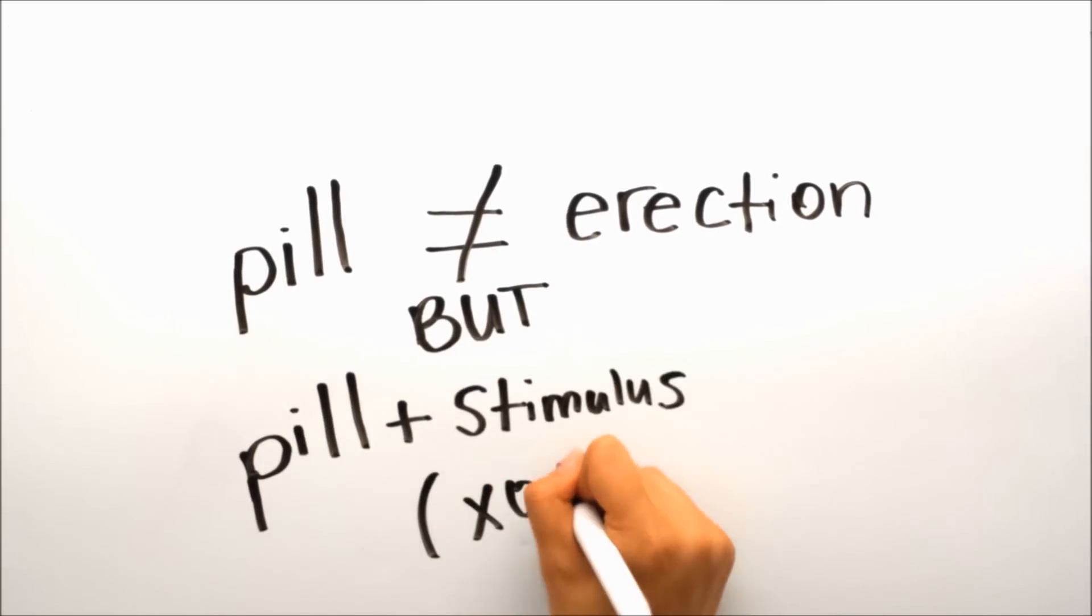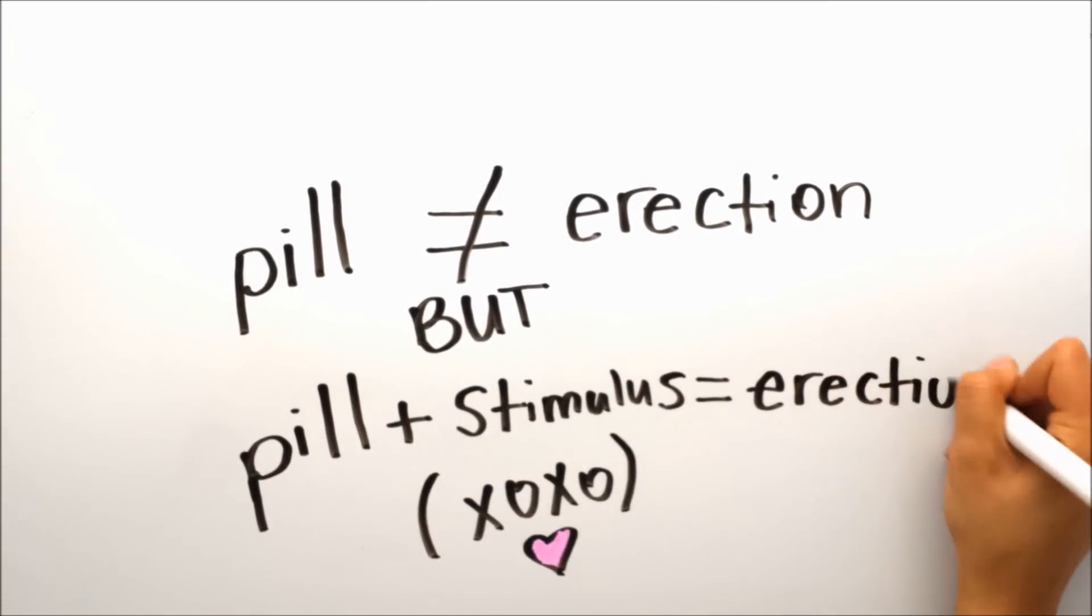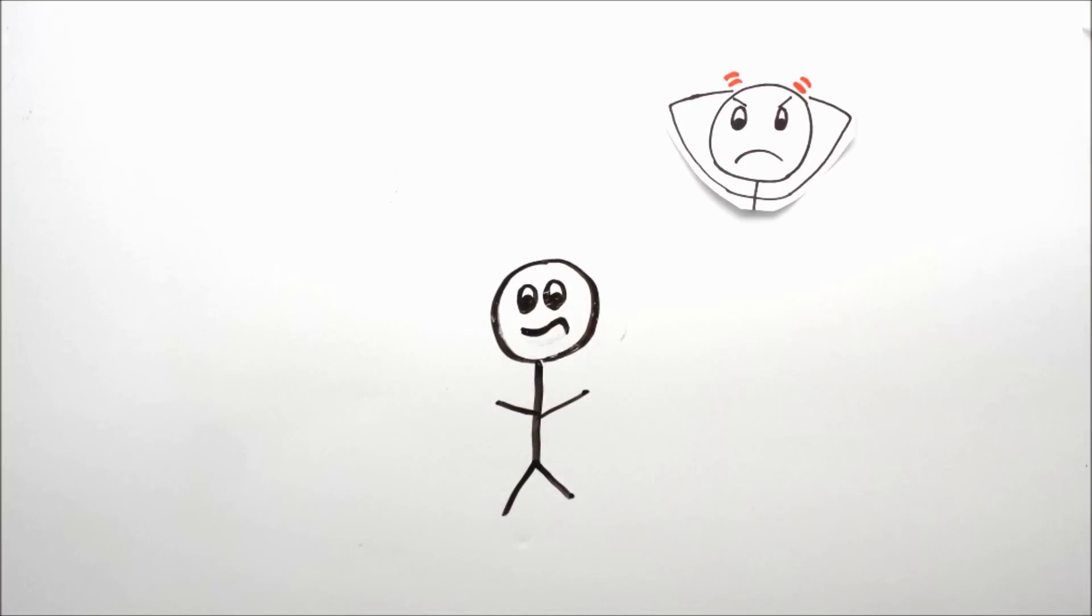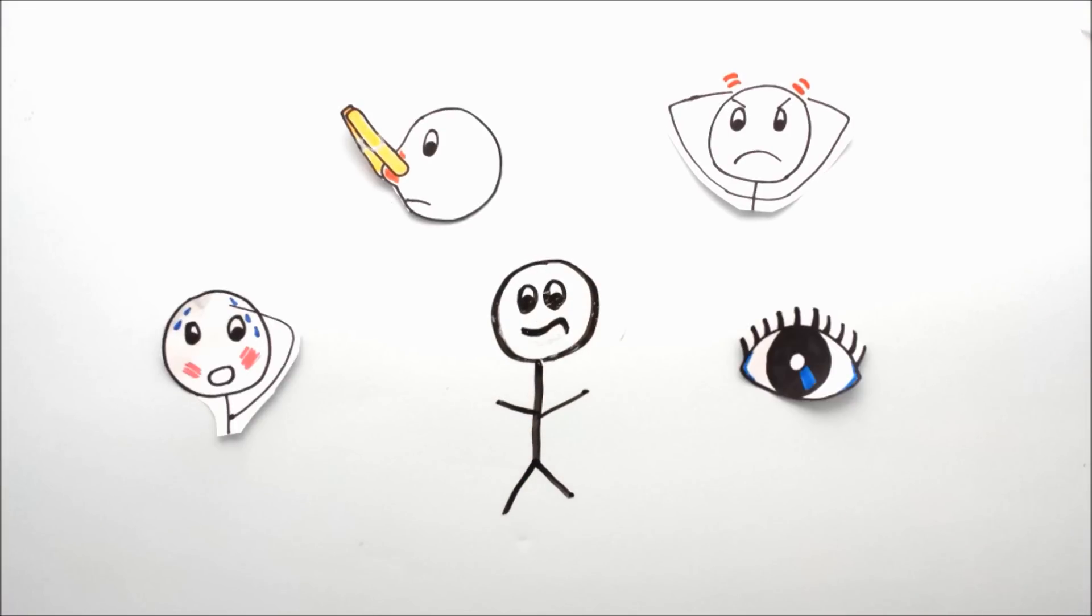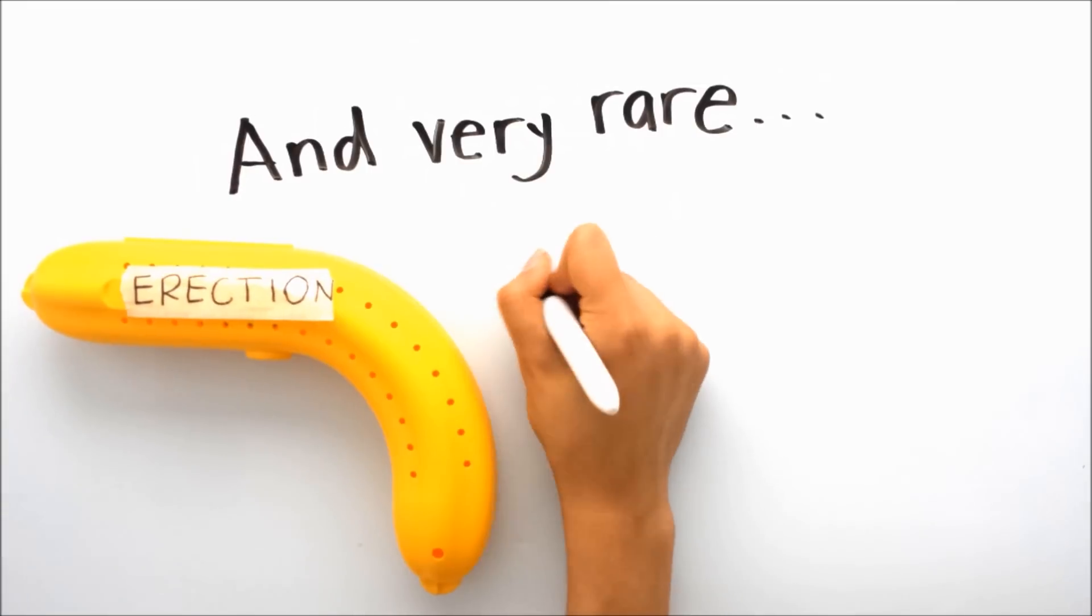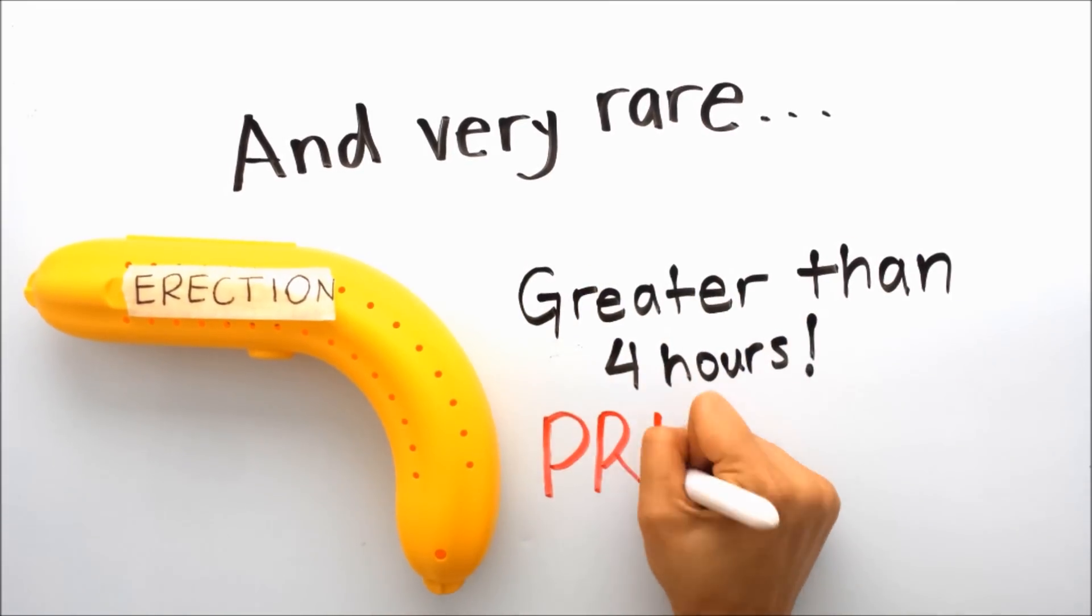You need both the pill plus the stimulus to produce an erection. Like all drugs, side effects can occur. The most common ones include headache, nasal congestion, flushing, and visual disturbances. And if the erection lasts longer than four hours, it is a medical emergency called priapism. It may cause pain and permanent sexual dysfunction if left untreated.